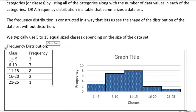So if these are my class values from 1 to 5, 6 to 10, 11 to 15, 16 to 20, and 21 to 25. And then inside the class I have a frequency associated with the class.